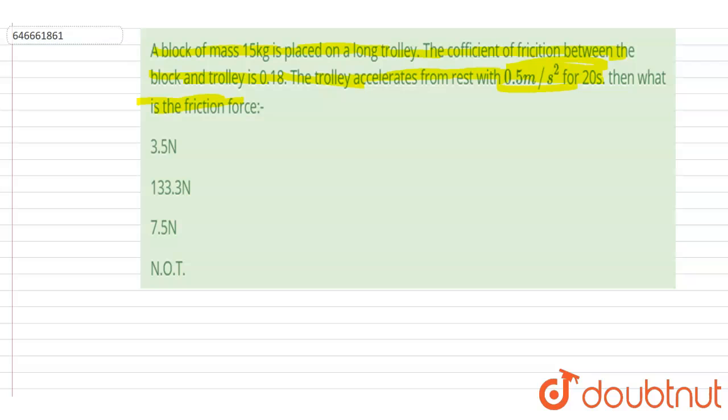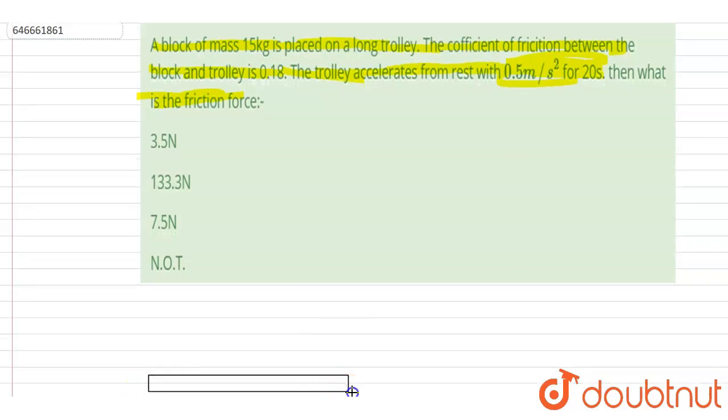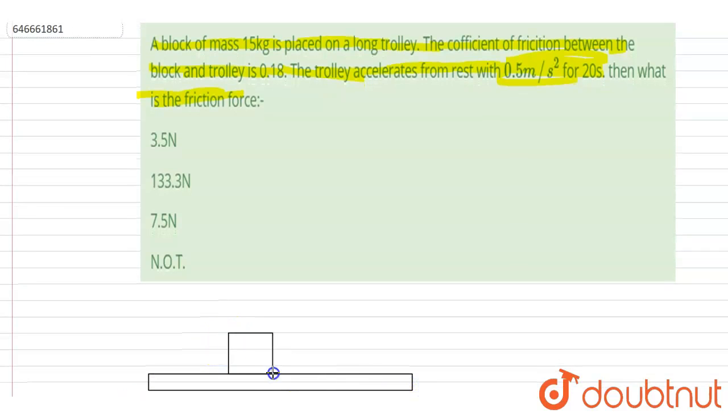So if you see here, let's say this is the trolley and on this trolley a block is placed. So the acceleration of the trolley is 0.5, it is given here. So you can check what is the friction force required.